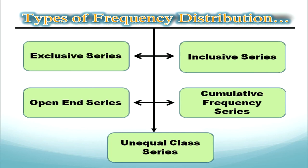Now that we understand the concepts of frequency distribution, we are able to construct different types. There are 5 types of frequency distribution: the first is exclusive series, the second is inclusive series, the third is open end series, the fourth is unequal class series, and the fifth is cumulative frequency series. We will discuss each type in detail with key features and examples.